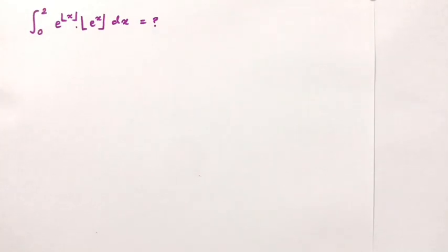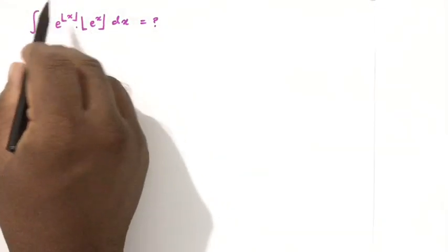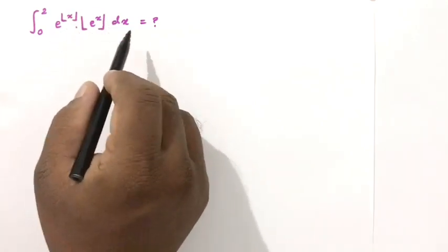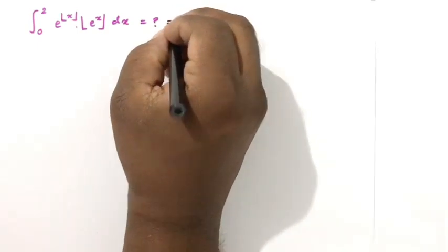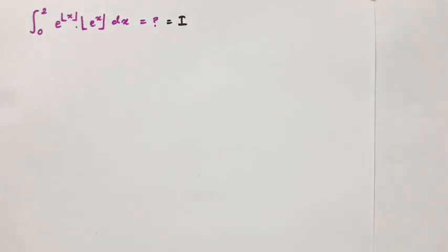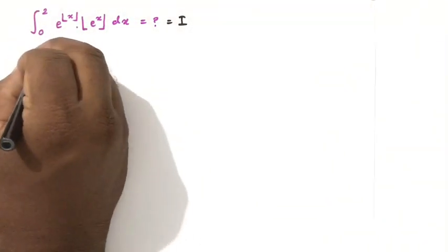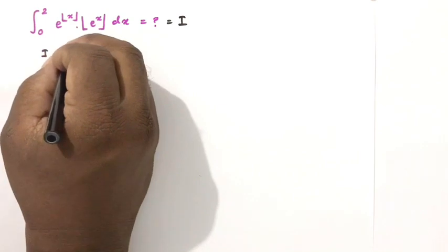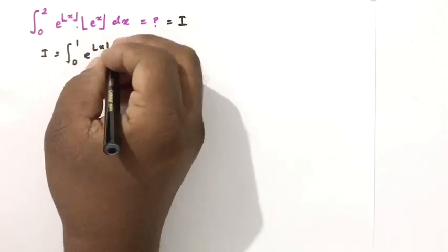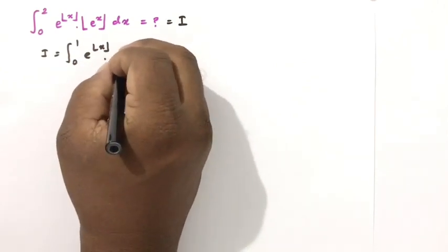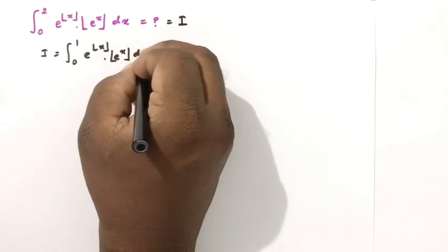Welcome to the Mathematics channel. In this video we are going to solve this interesting integral: the integral from 0 to 2 of e to the floor of x times floor of e to the x dx. In previous videos we solved this type of integral using the floor function. First, we can take this integral equal to I, then break the boundaries into the integral from 0 to 1 of e to the floor of x times floor of e to the x dx.